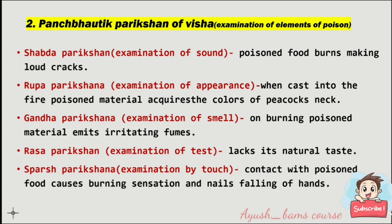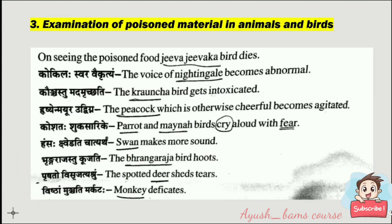Panchabautik parikshan involves five sensory tests. Shabdha parikshan (sound): poisoned food burns making loud cracks. Rupa parikshan (appearance): when cast into fire, poisoned material acquires the colors of a peacock's neck. Gandha parikshan (smell): on burning, poisoned material emits irritating fumes. Rasa parikshan (taste): it lacks its natural taste. Sparsha parikshan (touch): contact with poisoned food causes burning sensation and nails falling off the hands.